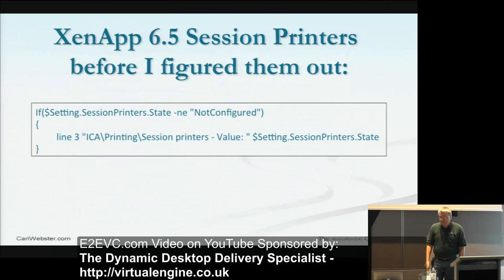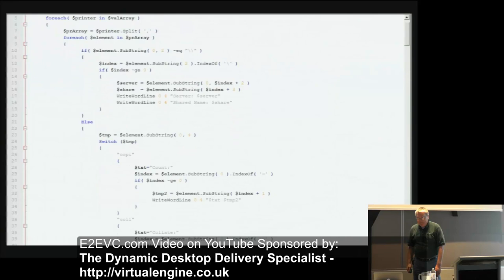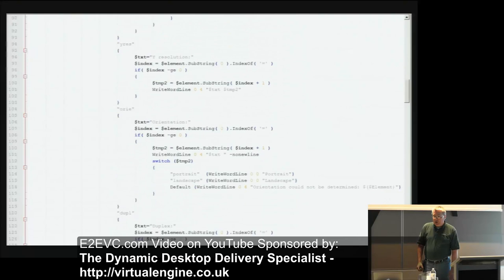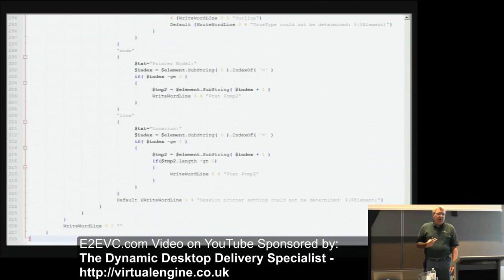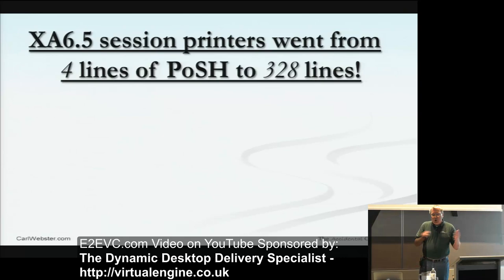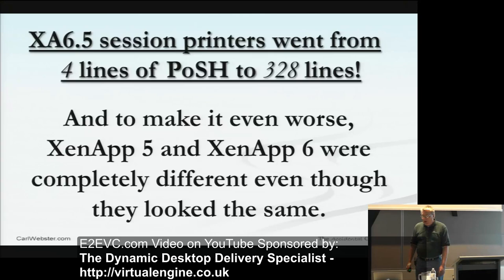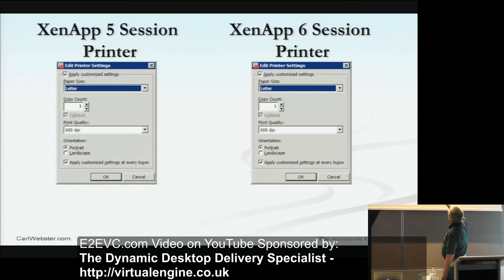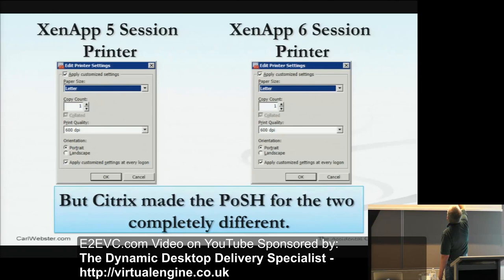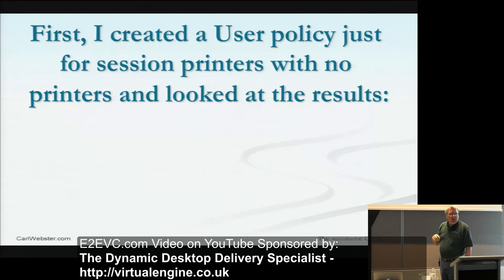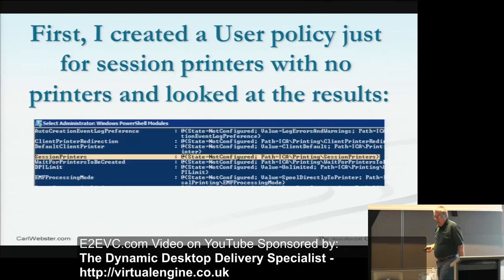To make it even worse, ZenApp 5 and ZenApp 6 were completely different even though they look the same in the UI. So how did I figure out session printers? First, I created a user policy for session printers with no printers and looked at the results — 'session printers not configured.' Then I added two printers: one I could modify and one I'd leave alone, so I could make sure changes didn't affect the other. Then I re-ran my little script. Now it's enabled and I got 'values equals' — but why is session printers 'values'? Isn't everything in PowerShell supposed to be singular? Then I got 'values equals system dot object' — what the heck is system dot object?